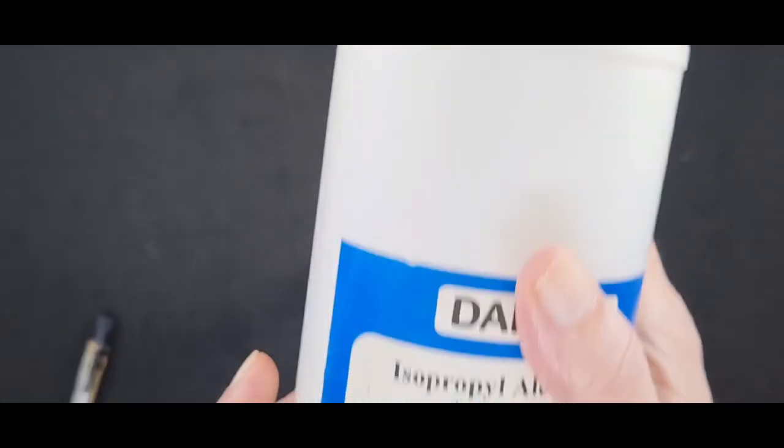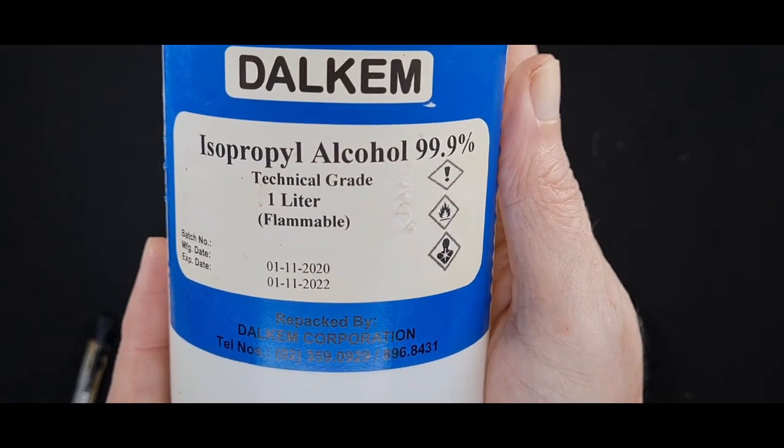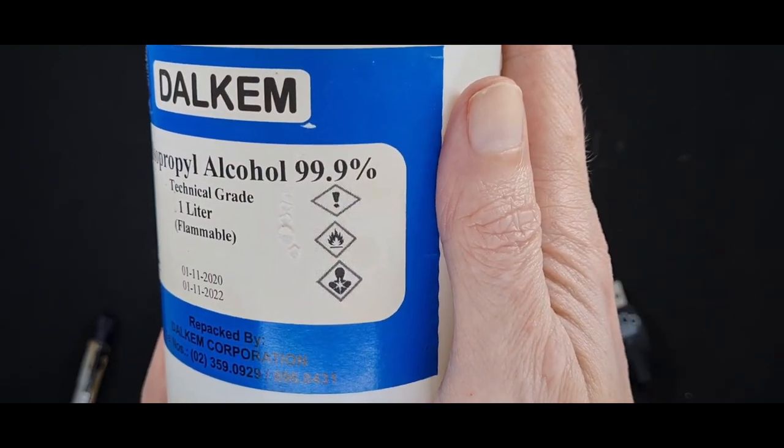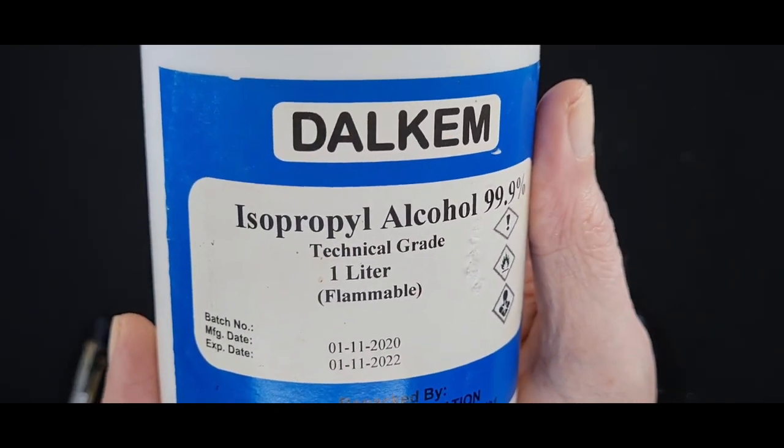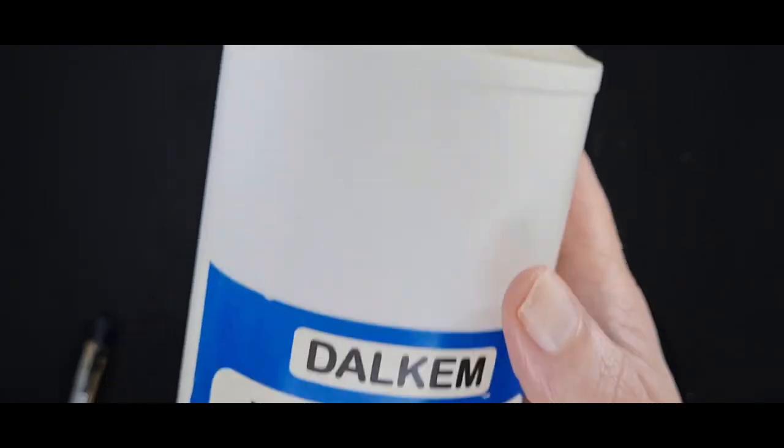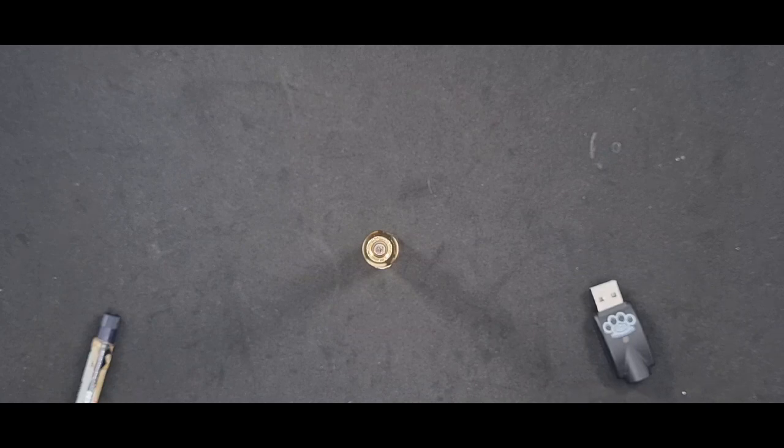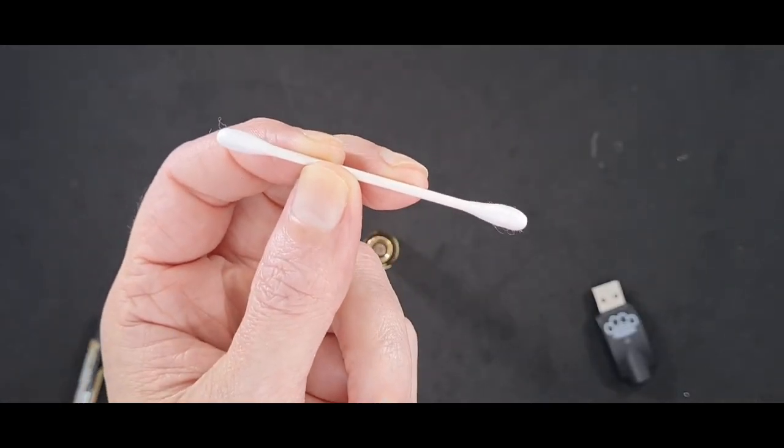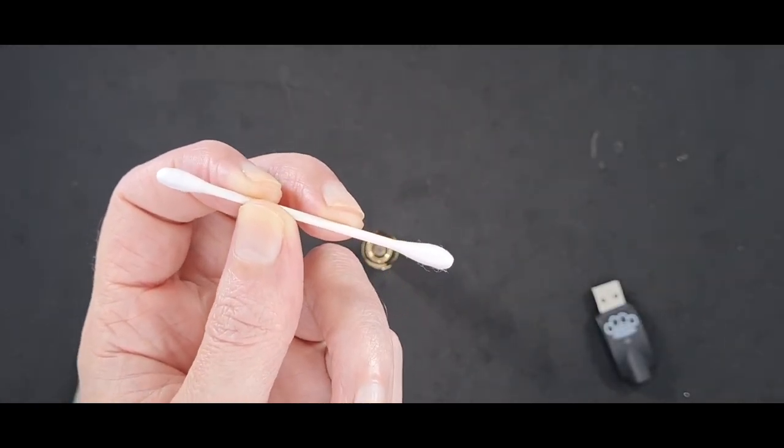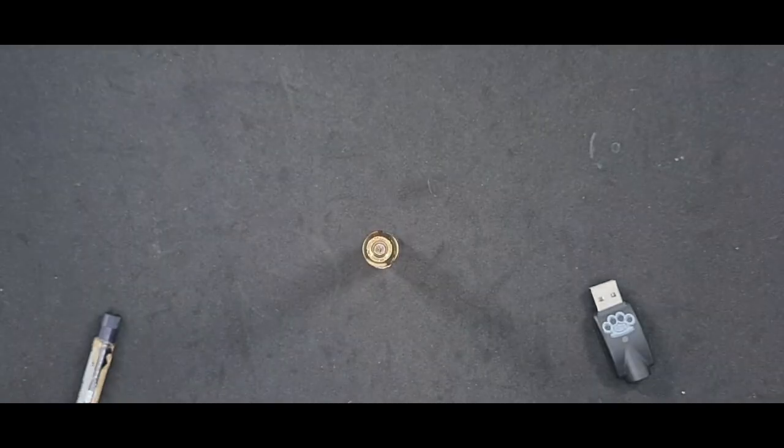What do I like to use? This right here: IPA 99.9% tech grade. You can pick this up at any chemical supply house in your city, every city has a chemical supply house. What else do you use? A Q-tip in America, Q-tip in the Philippines, a cotton bud.